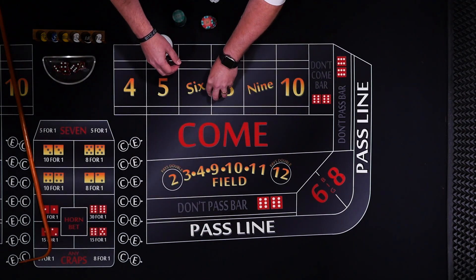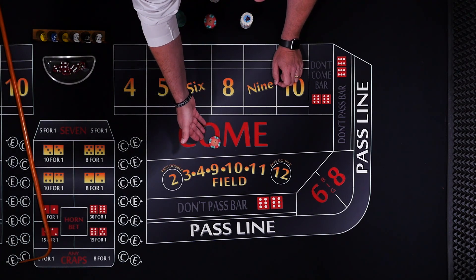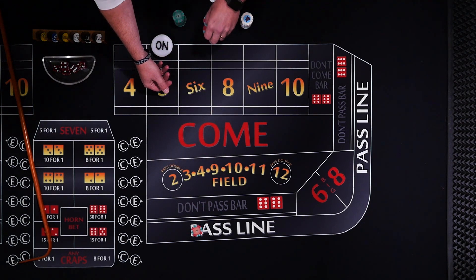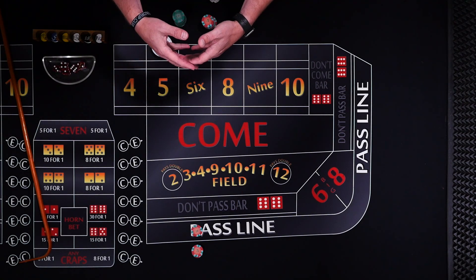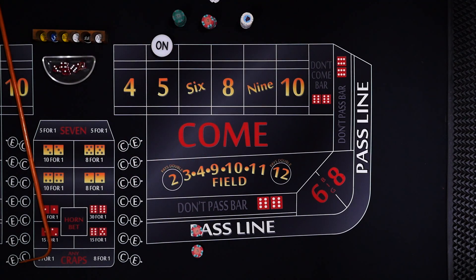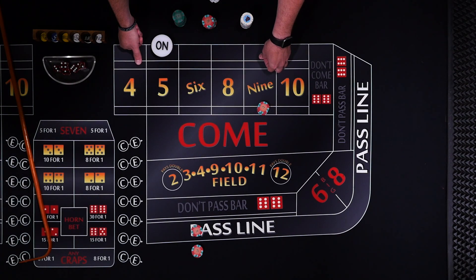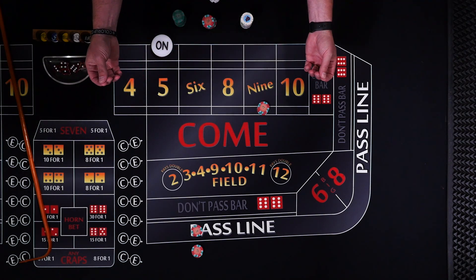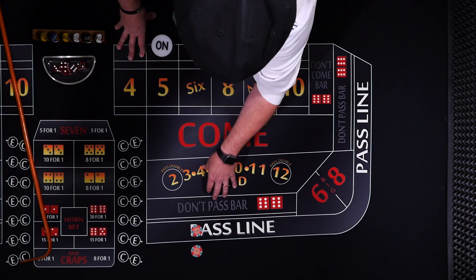To recap: the advantages of the pass line and come are that huge 2-to-1 advantage for the player on the first roll — that's really cool. Second advantage: you can add an odds bet at 0% house edge. If you're worried about the math, this is the greatest bet you can make in the casino. The downside is this bet will actually pay less than an equivalent place bet until you're above a 3x, 4x, or 5x table — and most casinos are exactly at 3x, 4x, or 5x odds.